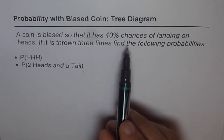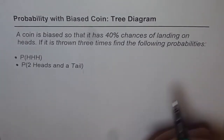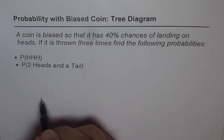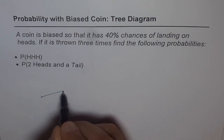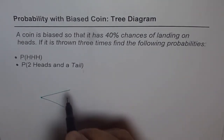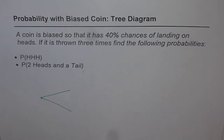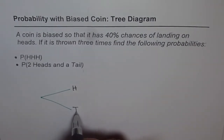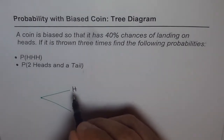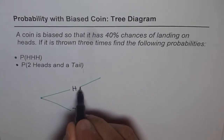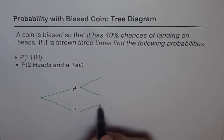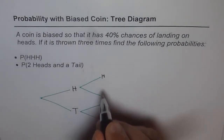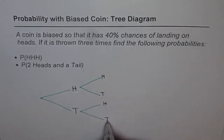We are throwing a coin 3 times, and a coin can give you only head or tail. Let's make a tree diagram. In the first trial we can get head or tail. In the second throw we again get head or tail from each branch. And similarly for the third throw, each branch again splits into head or tail.